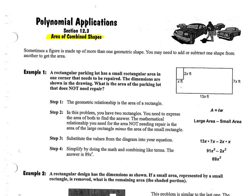Over here, you'll notice that we have two different shapes. We have this shape here, which is a rectangle. But then we also have a big rectangle here on the outside. Usually what they're going to ask you for is a piece of that whole rectangle. A rectangular parking lot has a small rectangular area in one corner that needs to be repaired in yellow. The dimensions are shown in the drawing. What is the area of the parking lot that does not need repair? So the blue. So in this case, they tell you that what you're essentially going to have to do is you're going to have to do area of the big rectangle minus the area of the small rectangle.